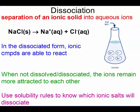Dissociation is the separation of an ionic solid into aqueous ions. All your acids, bases, and salts will dissociate to some degree. In its dissociated form, ionic compounds are able to react because now they're in their ion form — they're not together.